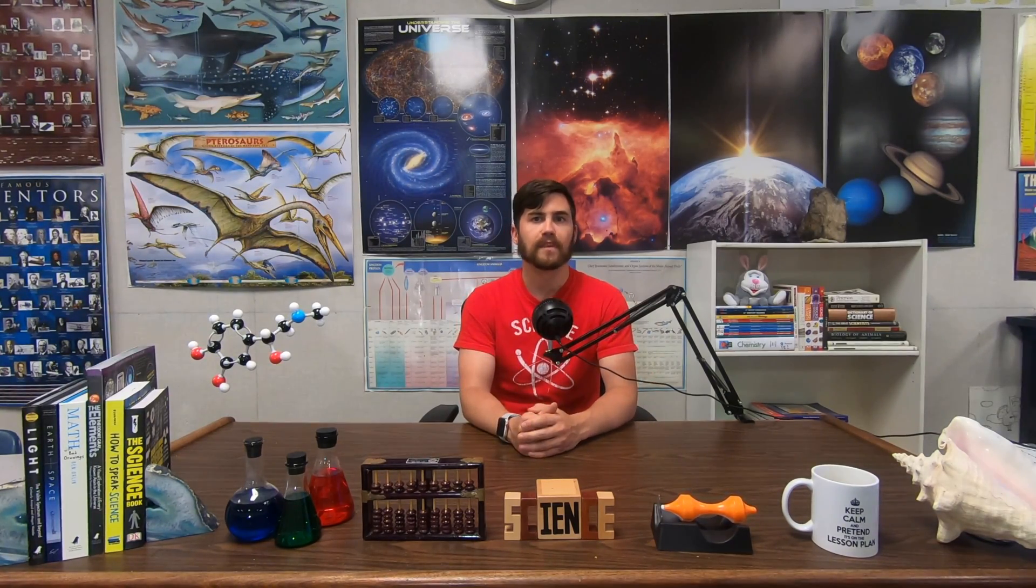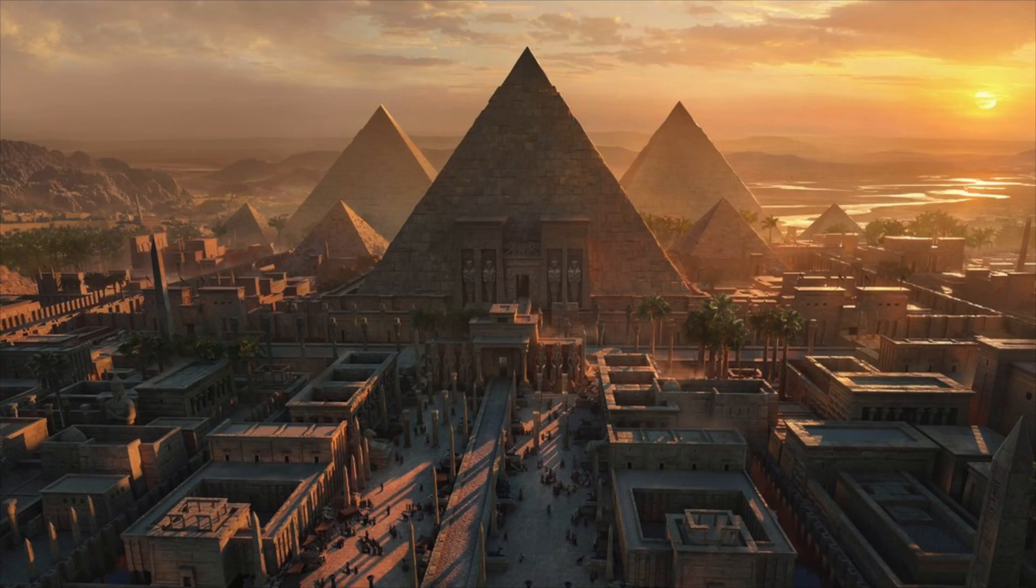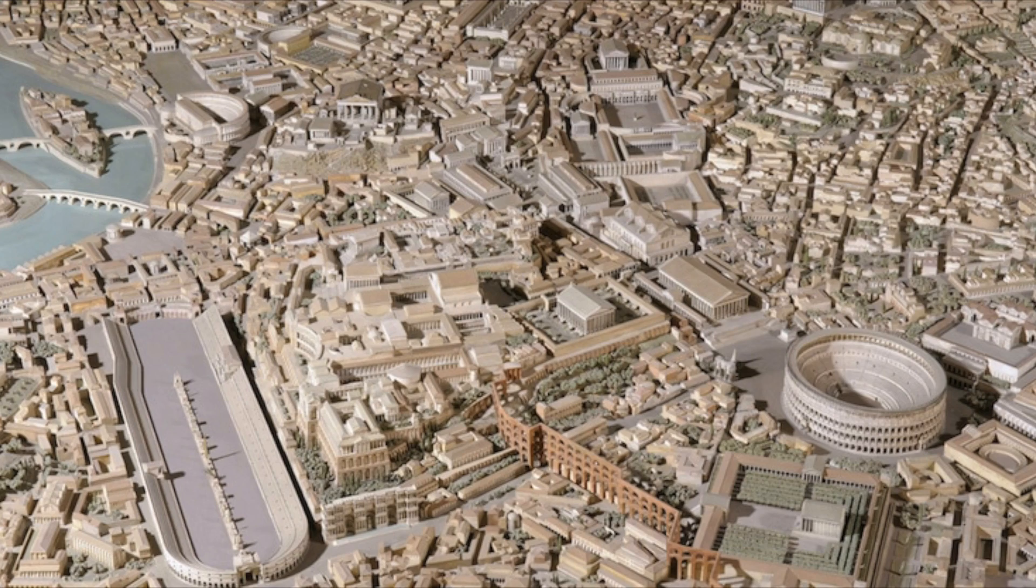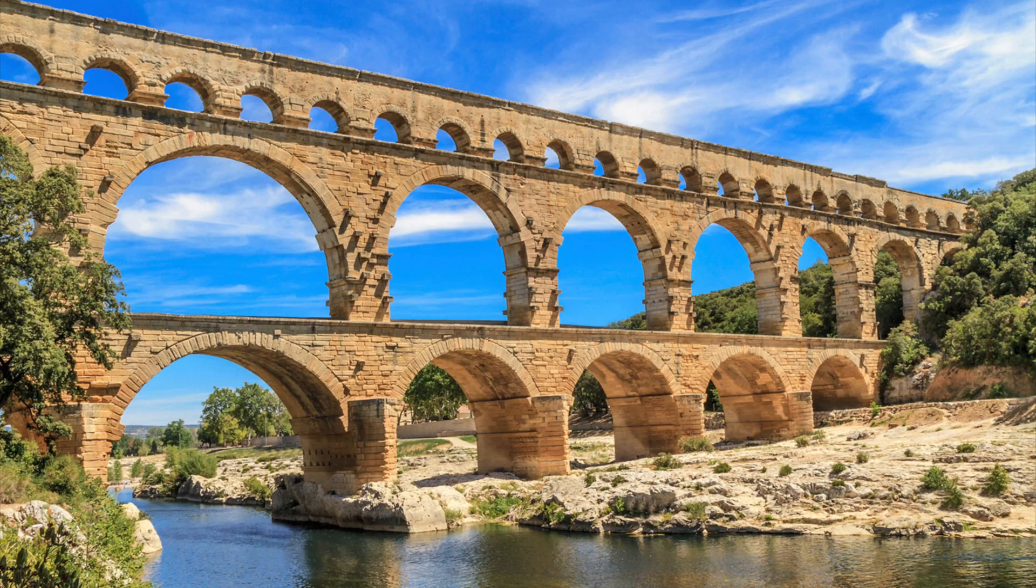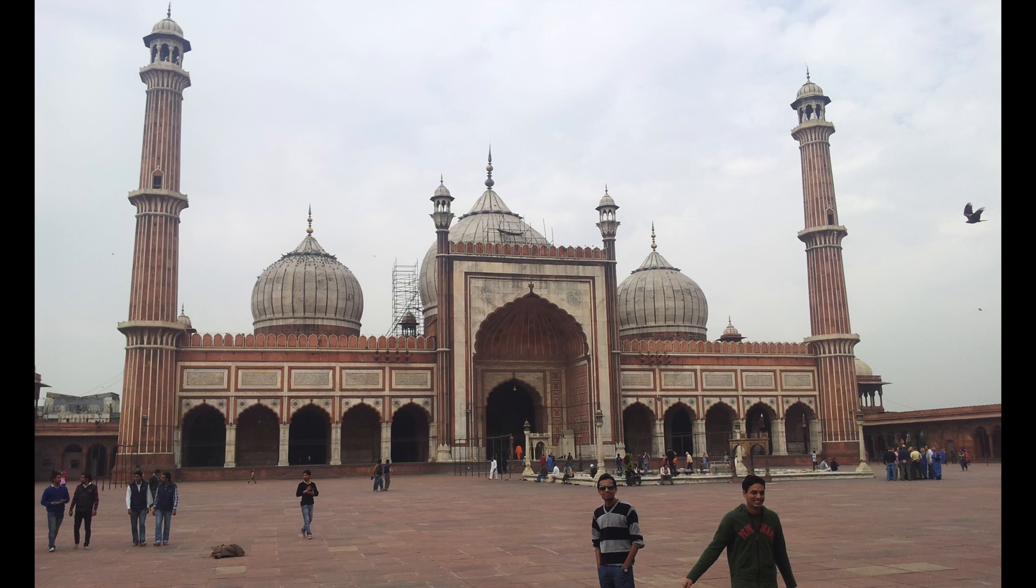Now the word science has only existed as we understand it for around 250 years. The word scientist was coined in 1834 by Cambridge historian William Hewell. People who studied the natural world before were called natural philosophers. In places such as ancient Egypt, Greece, Rome, and the Middle East, they didn't practice what we would consider science. This is especially surprising considering the unbelievable architectural achievements of these civilizations.